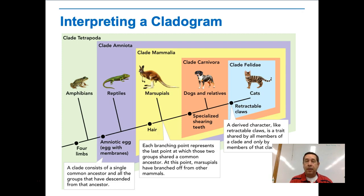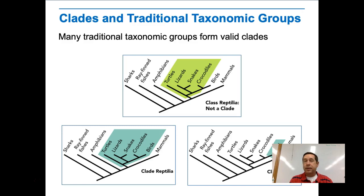The derived characters are represented on the cladogram, and basically anything above a derived character has that character. For example, having four limbs — amphibians, reptiles, marsupials, and so on all have those. Having amniotic eggs: amphibians don't, but everything else does. Having hair is found in mammals. Shearing teeth are found in carnivores, and retractable claws are found in cats.